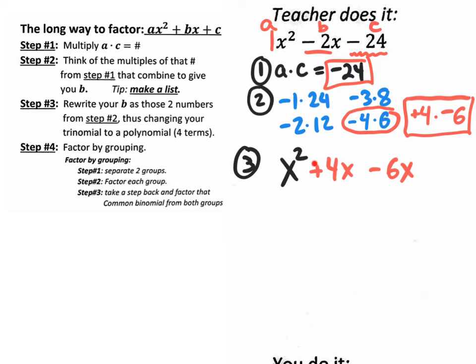Because after all, if I go plus 4x minus 6x, I'll actually get the negative 2x that I have up there. Make sense? So we still have the c value of negative 24. I'm going to write down that c value of negative 24 at the very end.